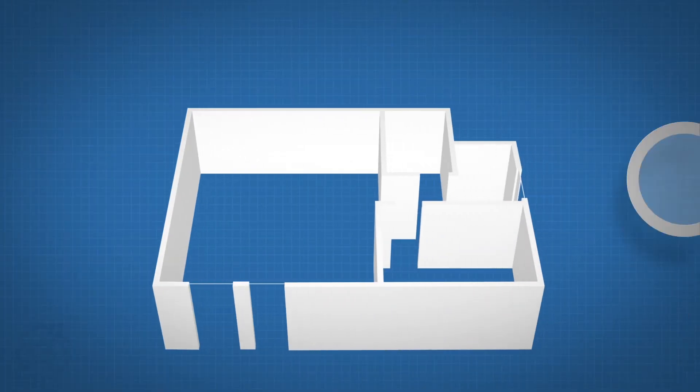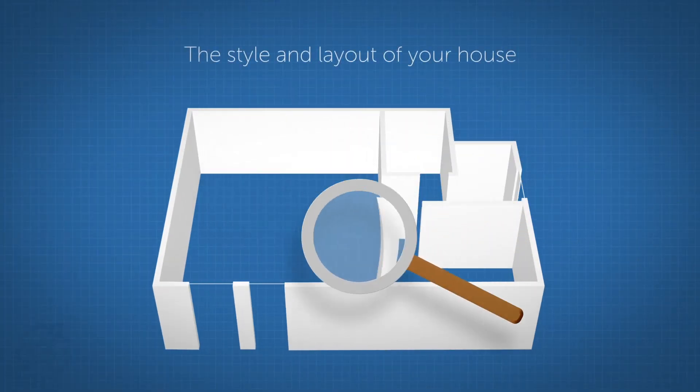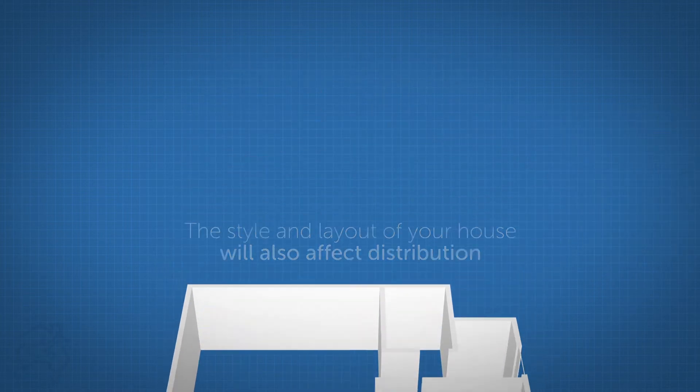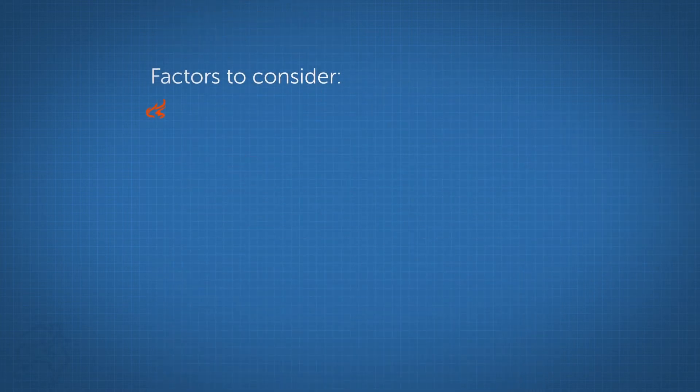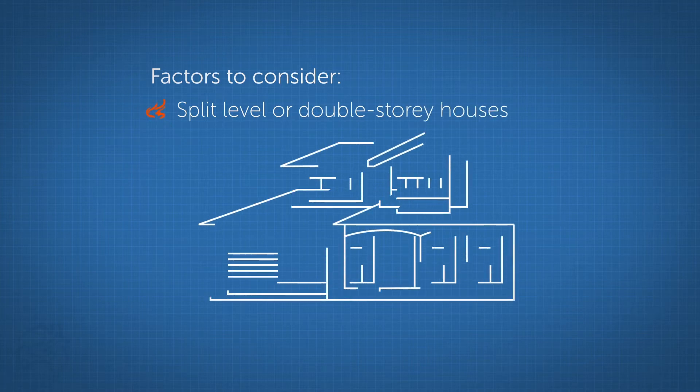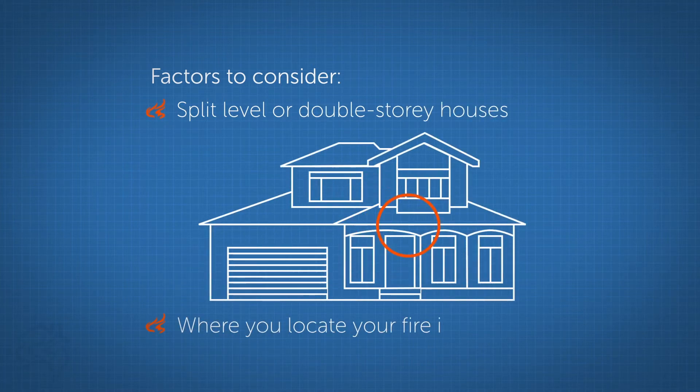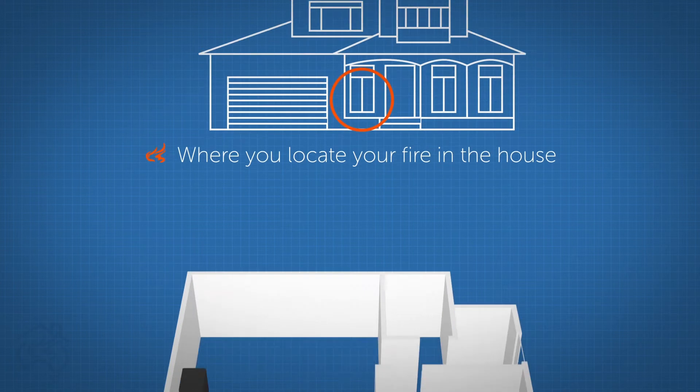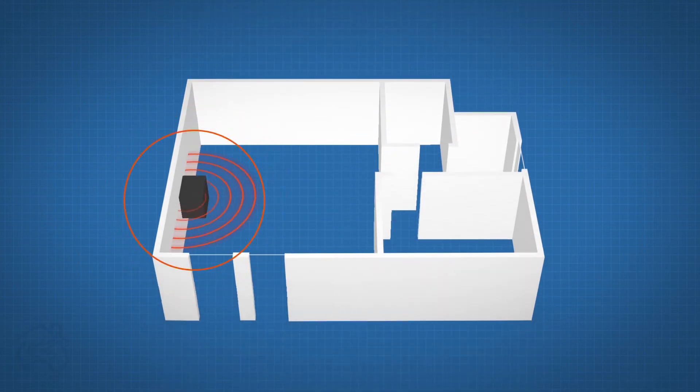The style and layout of your house will also affect the unit's ability to distribute heat. Factors to consider include split level and double storey houses and where you locate your fire in the house for better heat distribution. The more central the location of your fire, the better.